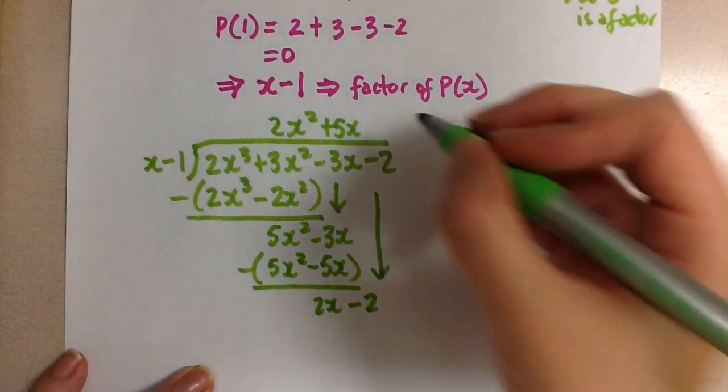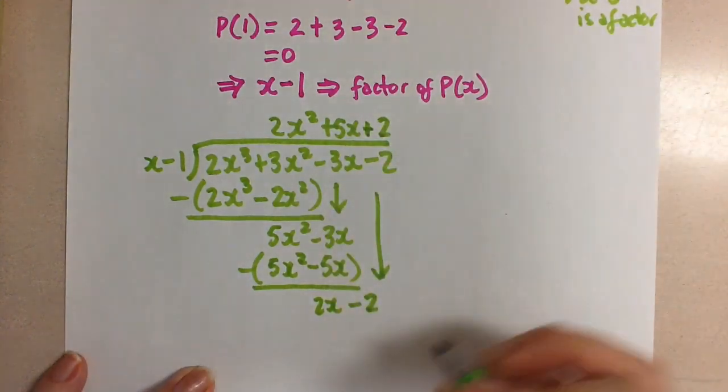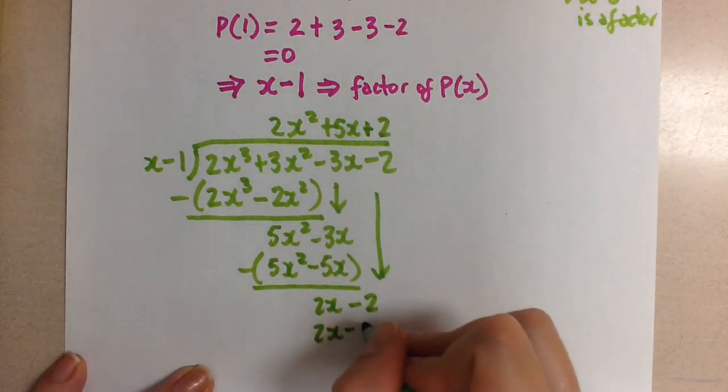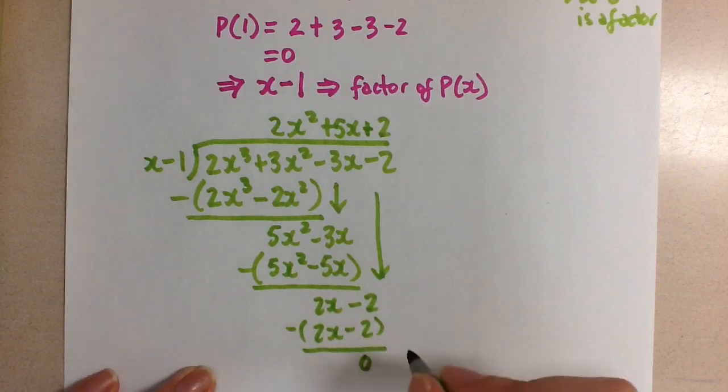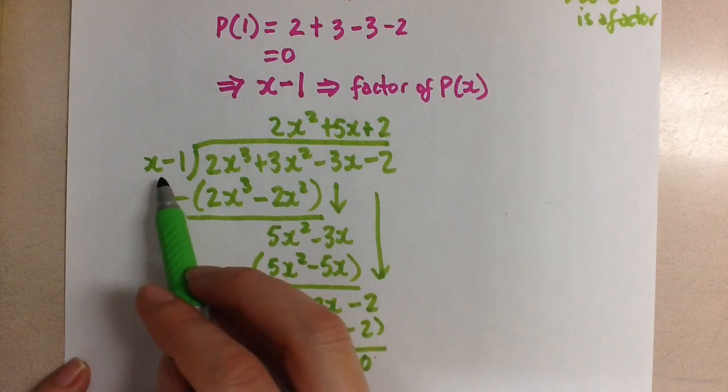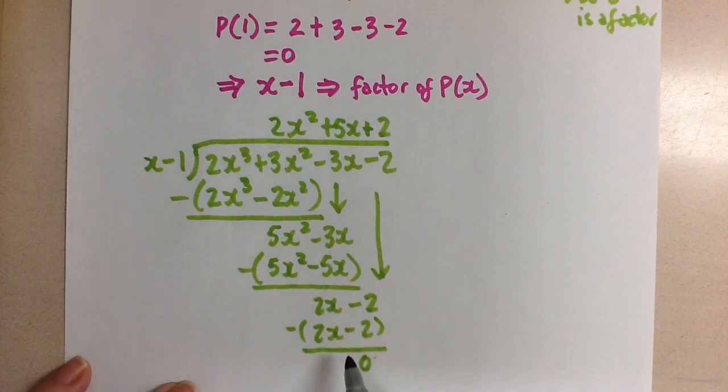X goes into 2x two times, and when we multiply, we get 2x minus 2. Notice how we end up with a remainder of 0. That's what we should get, because we determined that x minus 1 is a factor. If we get a remainder here, then something has gone wrong.